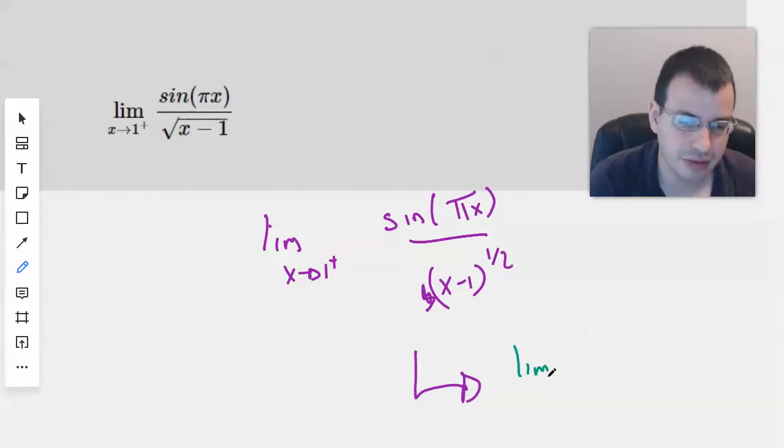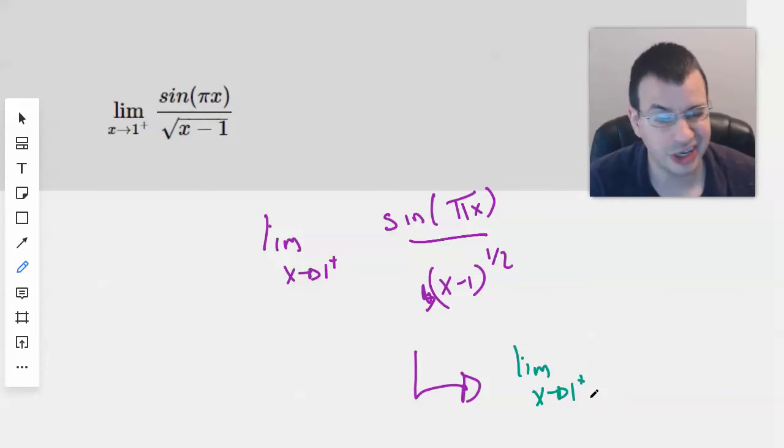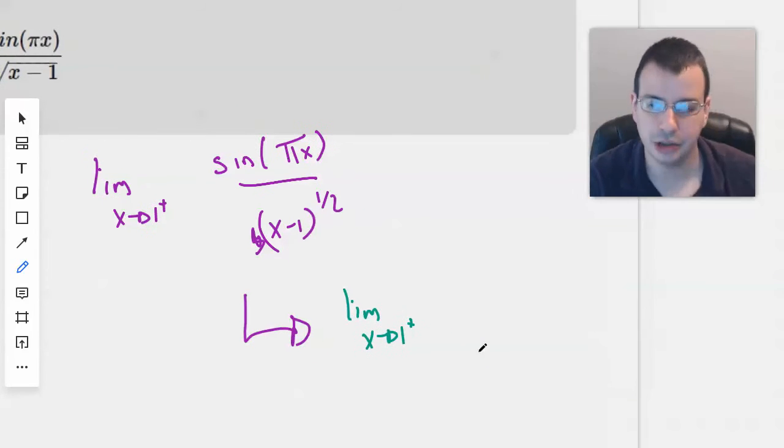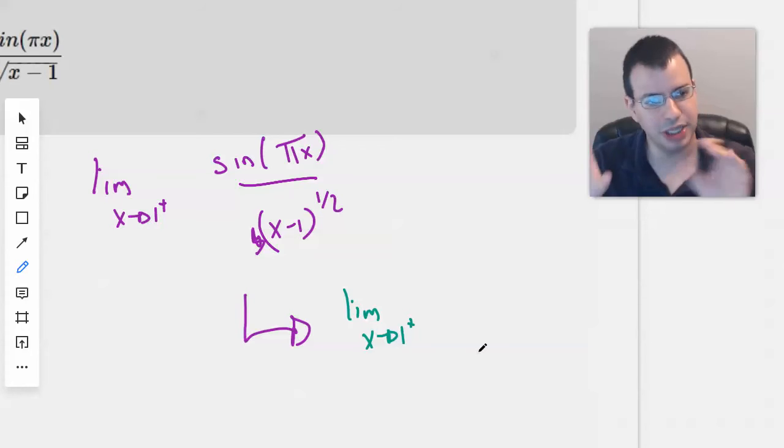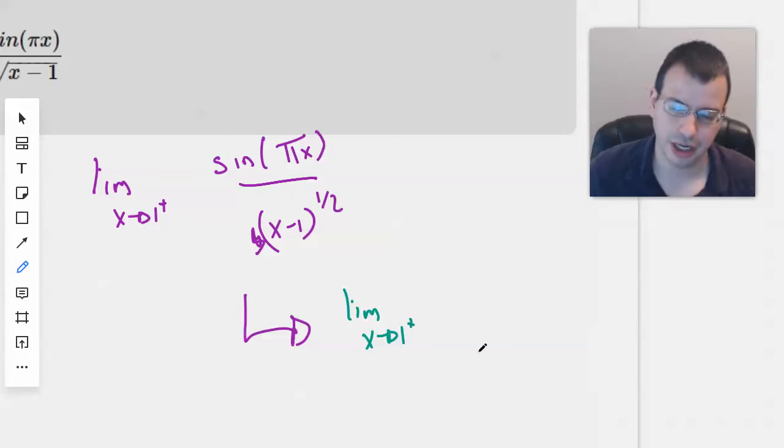So then we would have limit as x goes to 1 plus. So I didn't write equals because they're not equals, but I do kind of want to show some sort of relationship. You might be thinking, there's probably a better way of doing that. You could write, you know, take L'Hopital's rule or an arrow with some derivative signs. That's true.